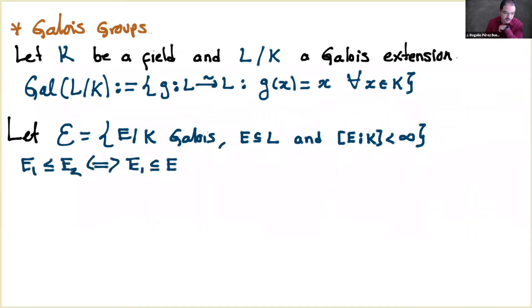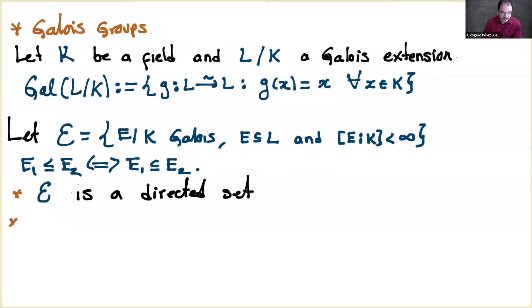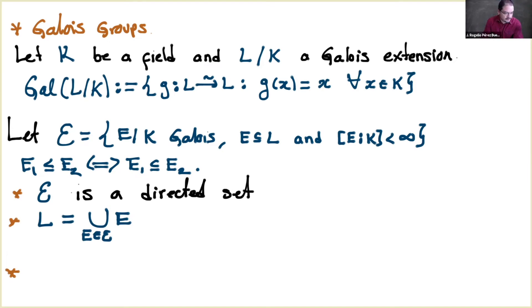The order is by containment: E_1 ≤ E_2 if and only if E_1 ⊆ E_2 as subfields. So A is a directed set. One can also verify that L is the union of all these finite Galois extensions — a classical result of Galois theory: every Galois extension is the union of its finite Galois sub-extensions.